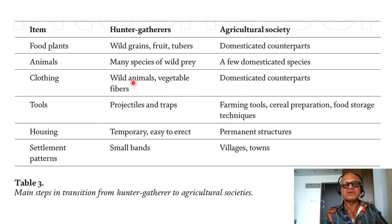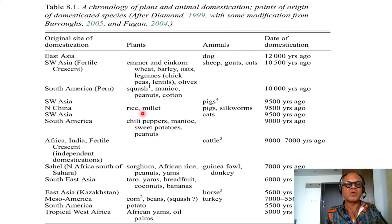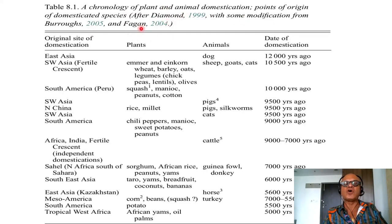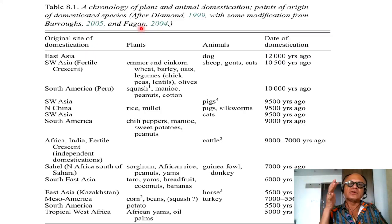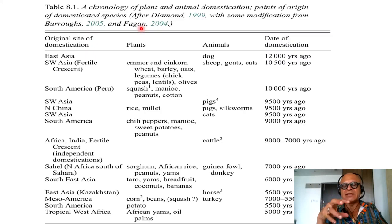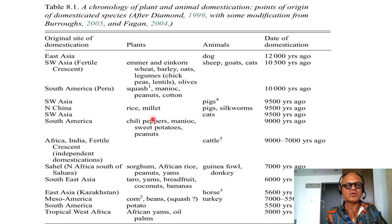There are still some tribes hunting and gathering in Amazonia and Africa, but they are a very small fraction overall. Another table on the ecology of plant and animal domestication covers points of origin of domesticated species from Jared Diamond, with some modifications from Burroughs and Fagan — big names in geography and anthropology who have different hypotheses on climate, environmental determinism, and impact on agricultural innovation, and whether agricultural innovation driven by climate perturbations comes first or cultural sophistication does.